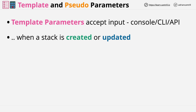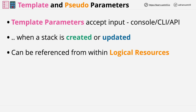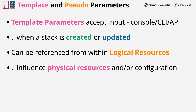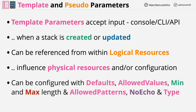Parameters are defined inside a template along with the resources, and the values for those parameters can be referenced within logical resources also within that template, which allows them to influence the physical resources and their configuration when a template is used with a stack to provision AWS resources. For every parameter you define, you can provide configuration — you can define defaults, allowed values, and restrictions such as minimum and maximum length or allowed patterns.